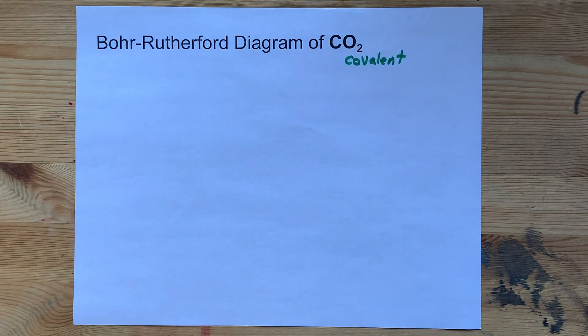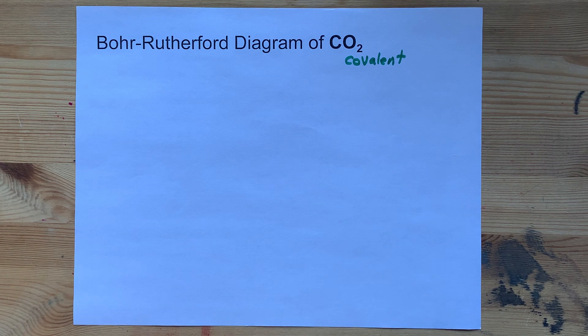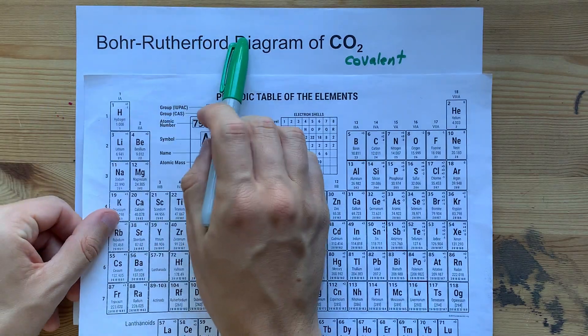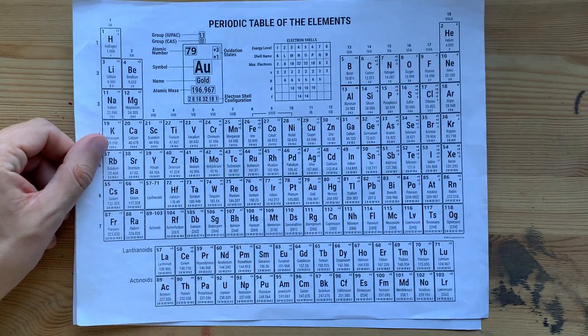Electrons are not transferred like they are in ionic compounds. To draw the Bohr-Rutherford diagram of a covalent compound, I want you to draw the Bohr-Rutherford diagram of each element separately first.